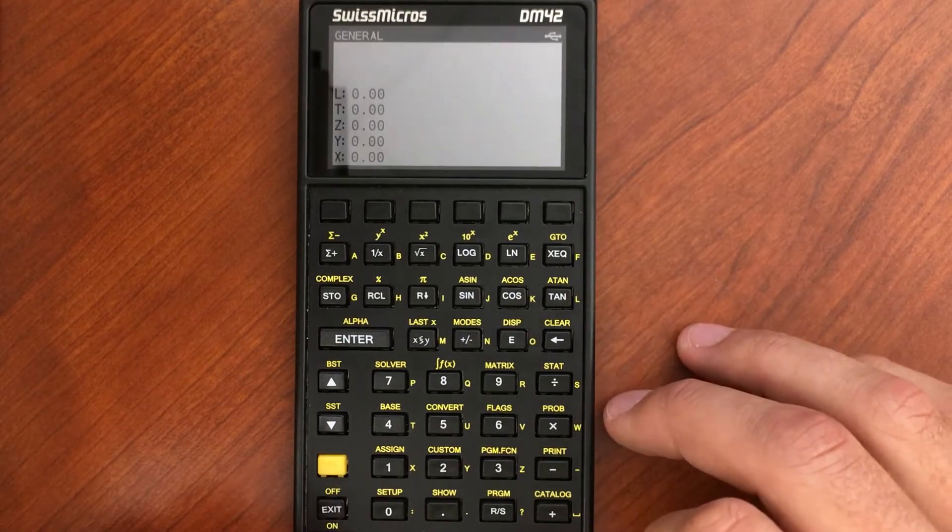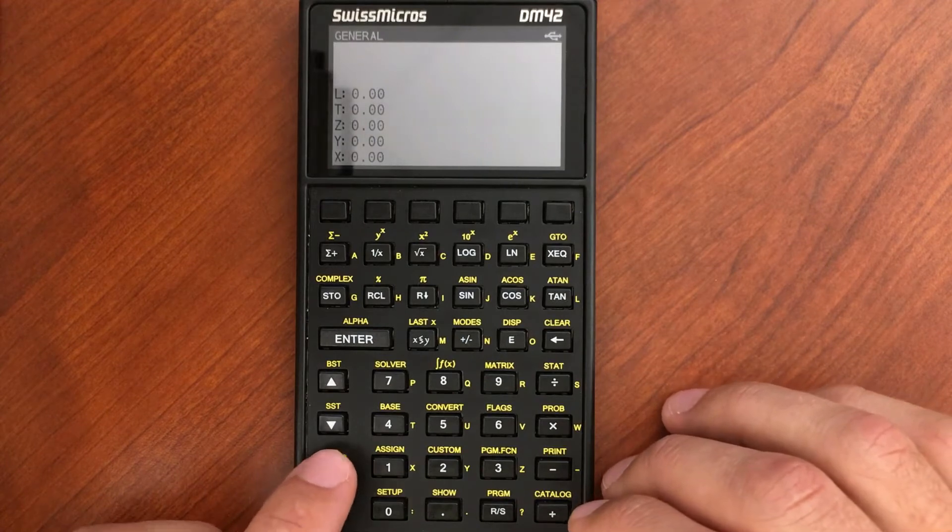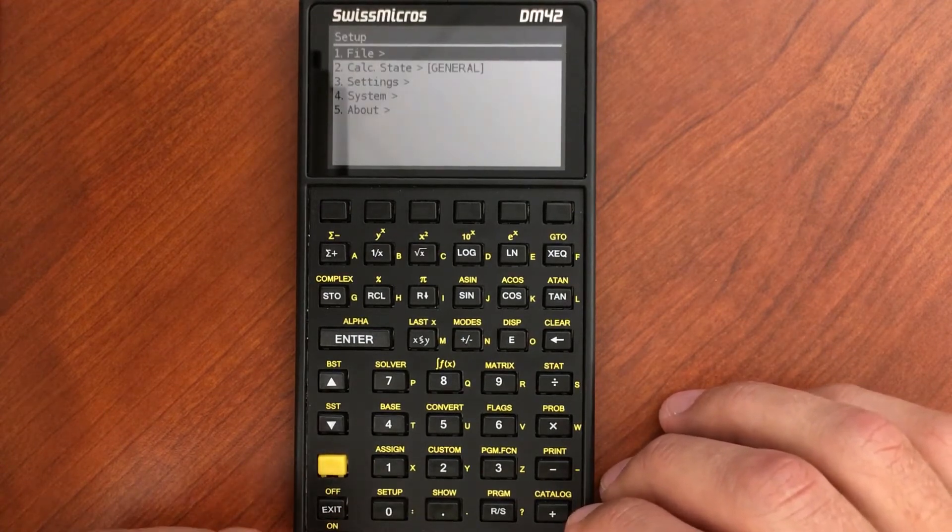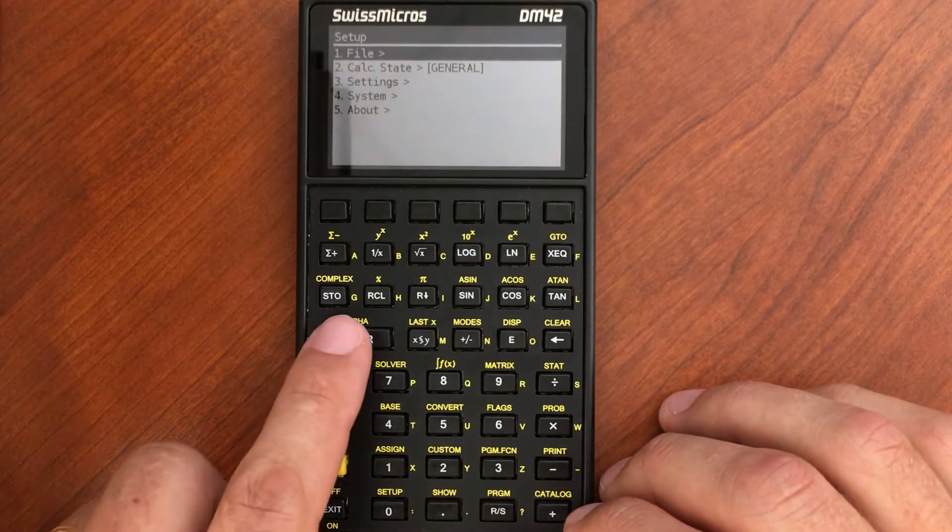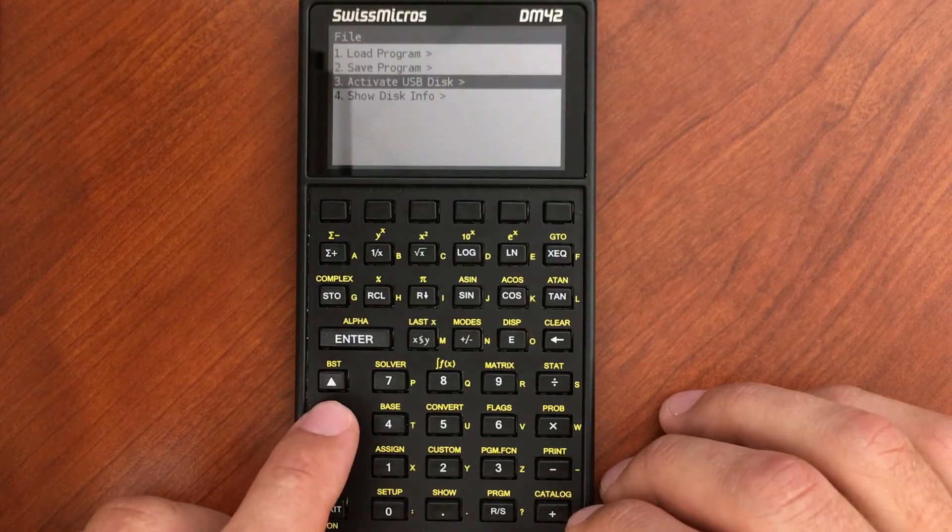I'm going to turn it on and then if I go Shift Setup, that brings up this menu. I go to File and then Activate.